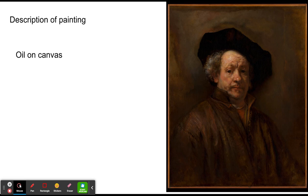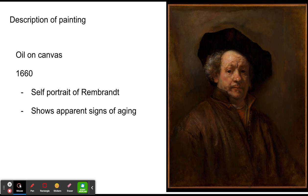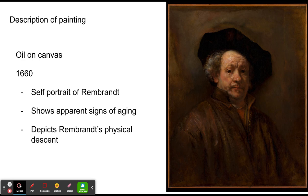The painting is oil on canvas, was made in 1660, and is a self-portrait of Rembrandt. The painting shows signs of his aging, with bags under his eyes, his double chin, and depicts his physical descent, with his head starting to bald.